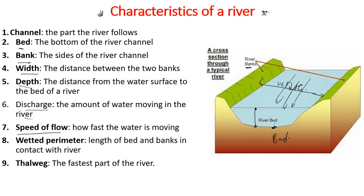The speed of flow is how fast the water is moving. The wetted perimeter is the area of the bed and banks that have contact with water. The thalweg is the fastest part of a river — the area where the water moves fastest. We're going to continue in the next lesson on the river profile and some river features.